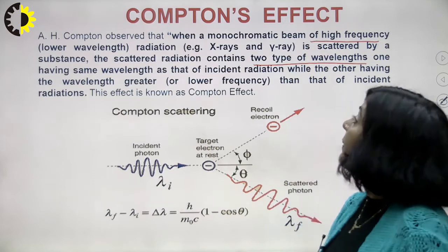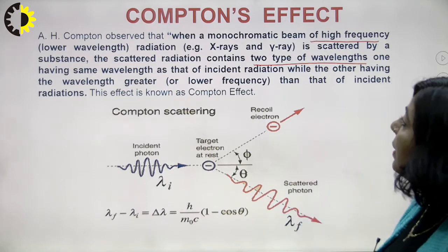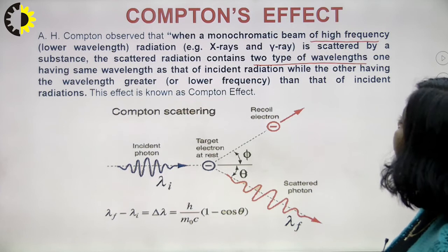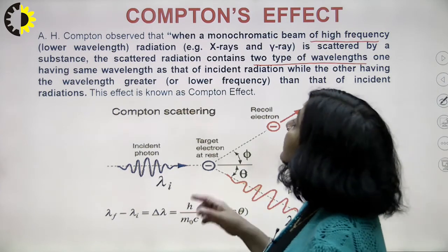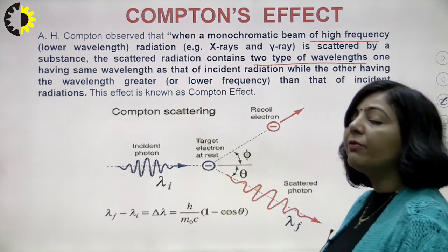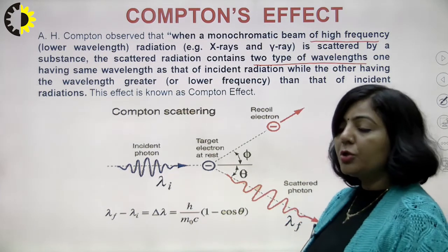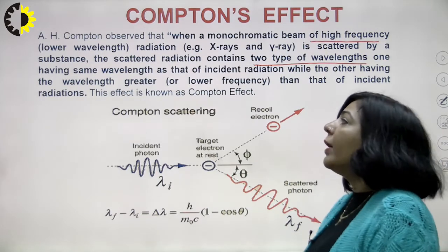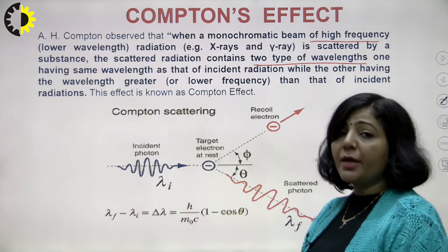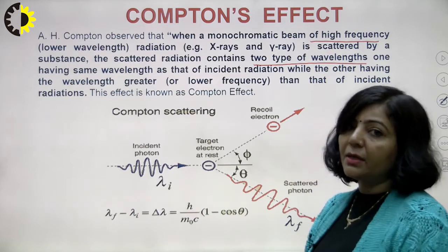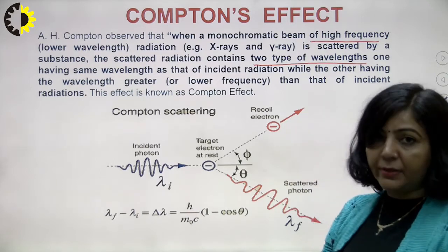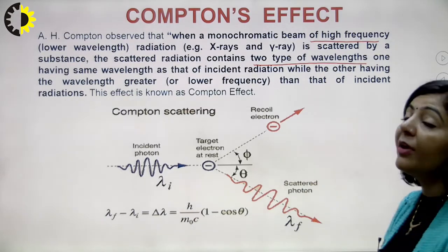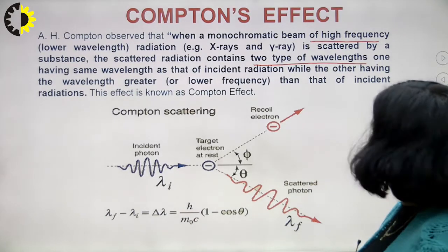The scattering produces two types of radiation: one having the same wavelength as the incident radiation, and another having a wavelength greater than that of the incident light.